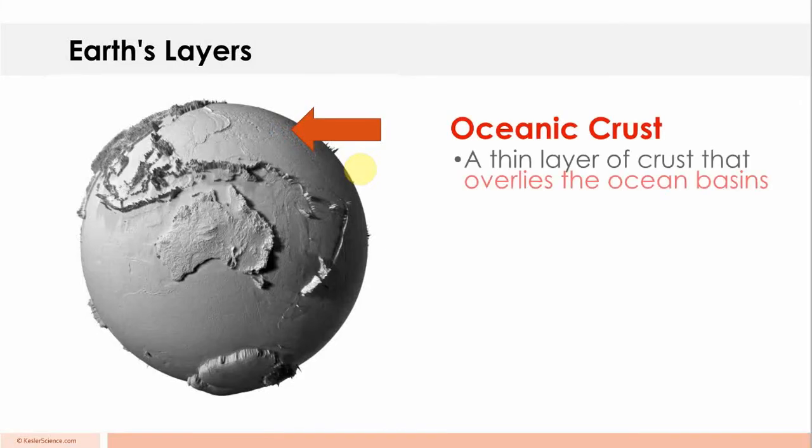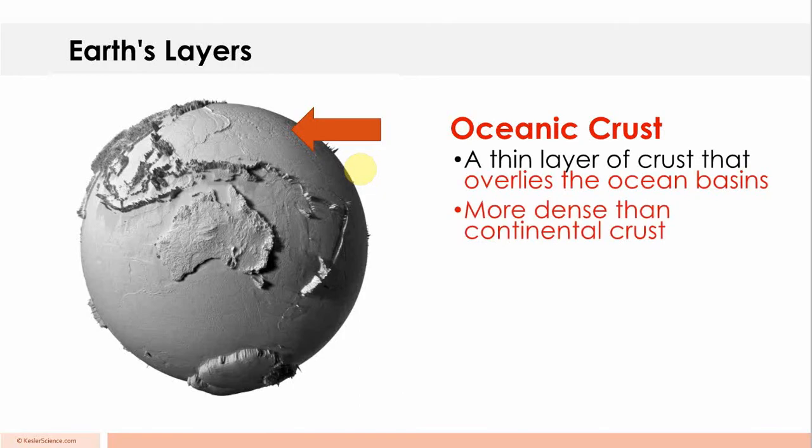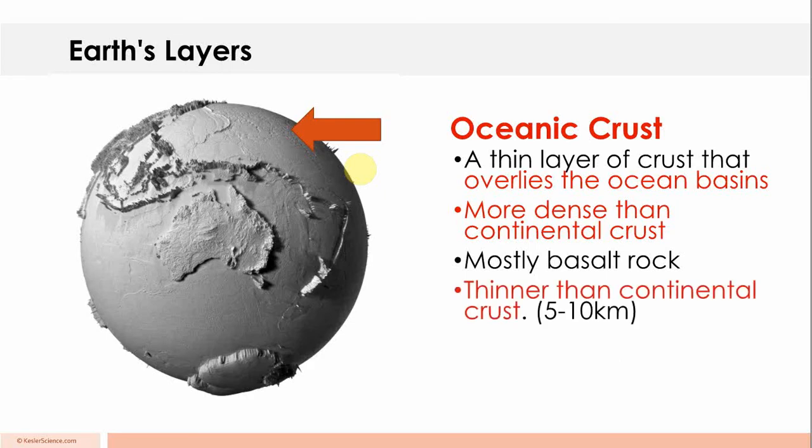Oceanic crust, a thin layer of crust that overlies the ocean basins, more dense than continental crust, mostly basalt rock. Thinner than continental crust, it is 5 to 10 kilometers thick.